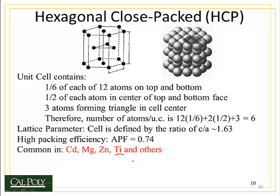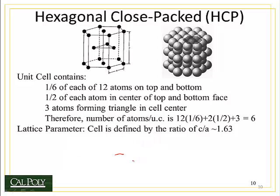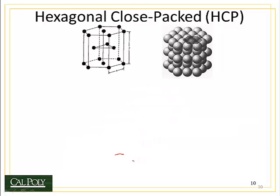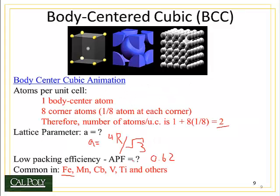You'll notice that titanium appears both in the hexagonal close-packed and in the body-centered cubic structure. Like iron, titanium is polymorphic. At room temperature, titanium occupies the hexagonal close-packed structure, but when heated it can occupy the body-centered cubic structure. We'll talk about other types of crystals in the next video.